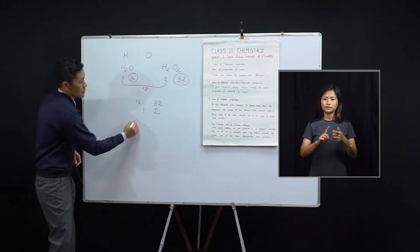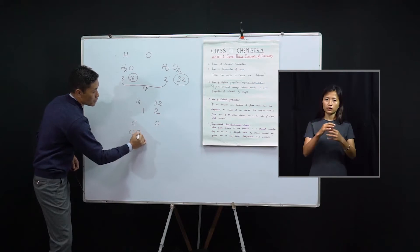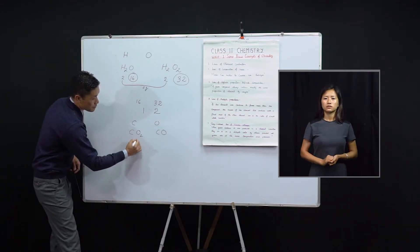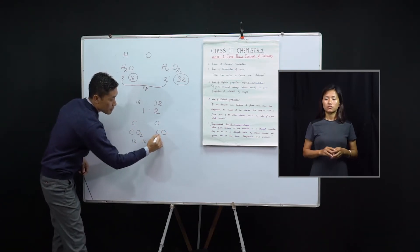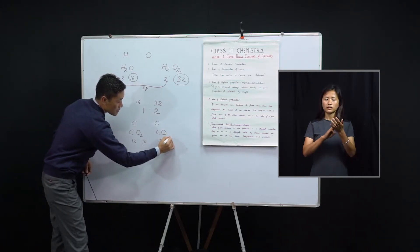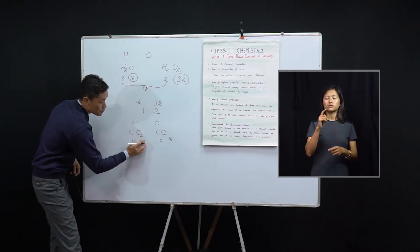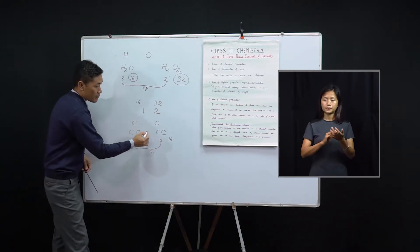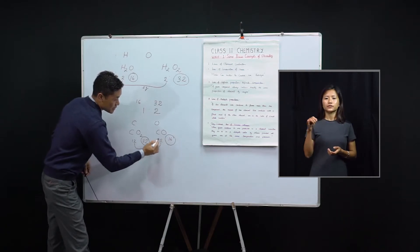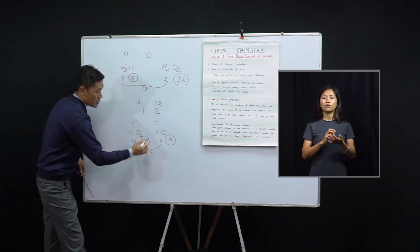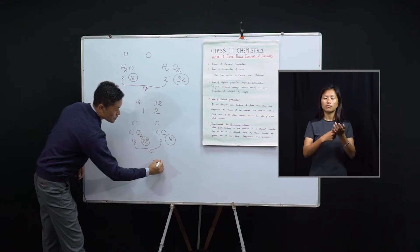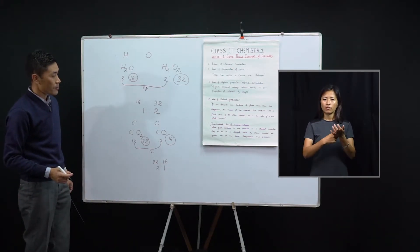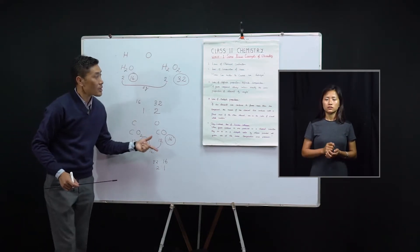Let us see another example. Carbon and oxygen combine to form two compounds: carbon dioxide and carbon monoxide. In carbon monoxide, the mass of carbon is 12 and the mass of oxygen is 16. In carbon dioxide, the mass of carbon is 12 and the mass of oxygen is 16 × 2 = 32. We fix the mass of carbon at 12 grams. The masses of oxygen are 16 and 32, giving a ratio of 32 to 16, which is 2 to 1 — a simple whole number ratio. This illustrates the law of multiple proportions.